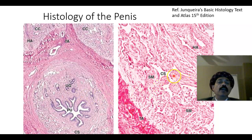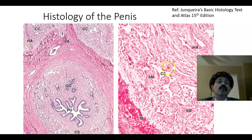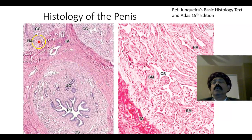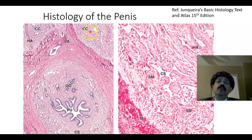These are the trabeculae around the erectile tissue. The erectile tissue spaces are called cavernous spaces, lined by endothelium. The muscular trabeculae are composed of smooth muscle with spindle-shaped muscle cells, and also contain collagen fibers and elastic fibers. This is the tunica albuginea — the dense fibroelastic connective tissue. The helicine artery, a branch of the central artery of the penis, pushes blood into the cavernous spaces for erection of the penis.